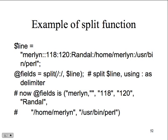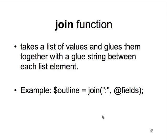Maybe the data is comma delimited, maybe space delimited - whatever the delimiter, just split it out and make it into a sorted list. Here's an example line that looks like a URL - we split by the delimiter, so our field is Marianne, 118, 120, Randall, and the home address. Join takes a list of values and glues them together with a string between each list element. 'Outline = join(delimiter, @fields)' glues the fields together.